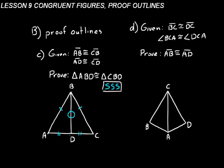Let's look at another geometric shape with two triangles. We're given that segment BC is congruent to DC, and angle BCA is congruent to angle DCA. We want to prove that segment AB is congruent to segment AD. This one is different — we have to prove two segments are congruent, not the triangles themselves. But in order to prove those segments are congruent, we have to prove the triangles are congruent first. Once we do that, those sides become corresponding parts and we can say they are congruent.